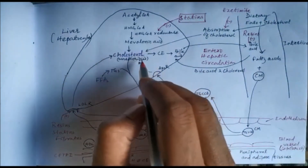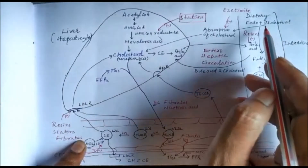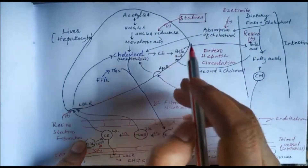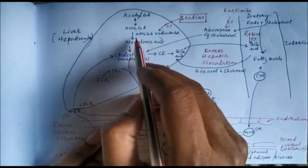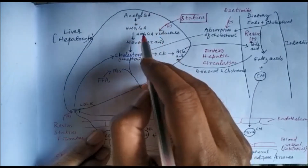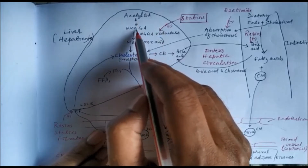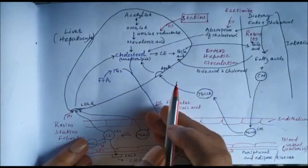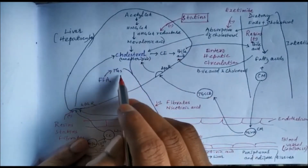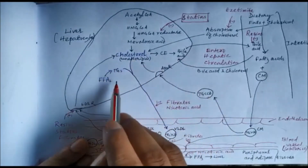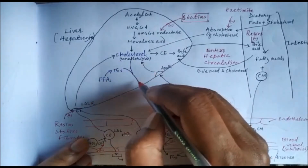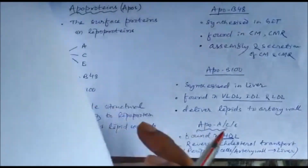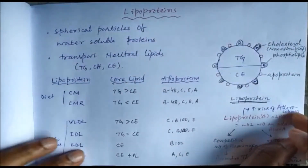Cholesterol has two sources: one source is our diet — dietary fats are absorbed and again reach the liver. The other source of cholesterol is synthesis inside the hepatocytes from acetyl coenzyme A. One important step is hydroxymethyl glutarate coenzyme A to mevalonic acid by the enzyme HMG coenzyme A reductase. This cholesterol along with triglycerides — synthesized from free fatty acids — form the very low density lipoprotein.